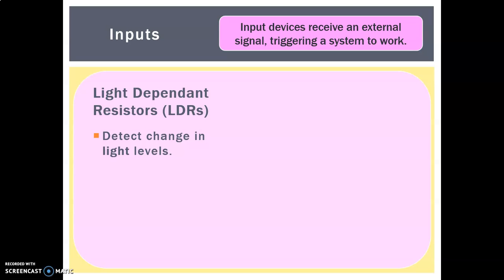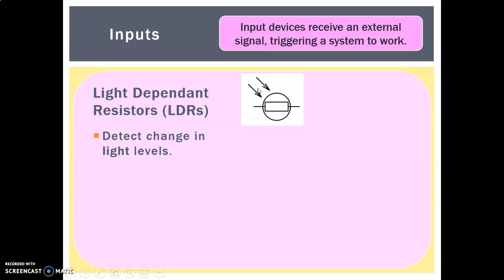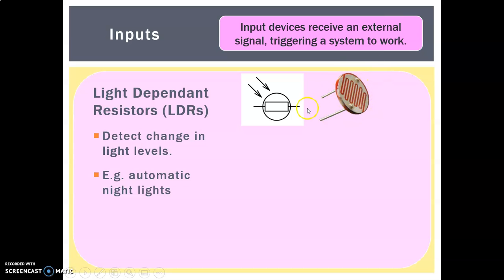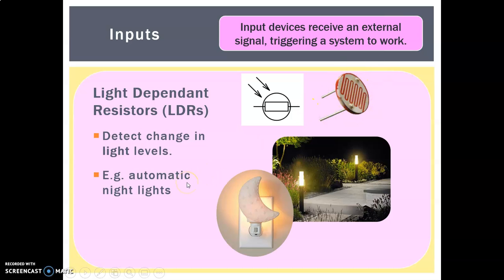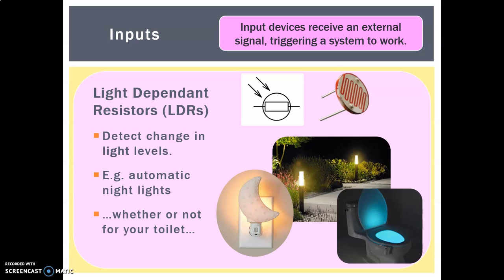The first input is a light dependent resistor, or LDR, which you may be familiar with from Year 7 or 9 projects. It detects changes in light levels. The electronic symbol is a resistor rectangle with arrows coming in to indicate it's taking in light. Examples include automatic night lights on your landing, lights in your garden, street lamps, and even some toilet lights.